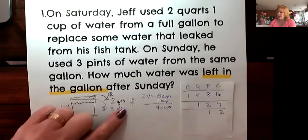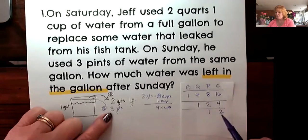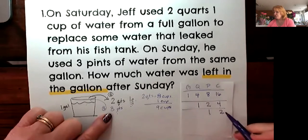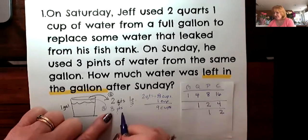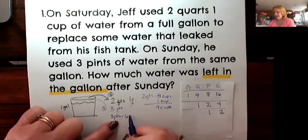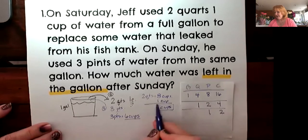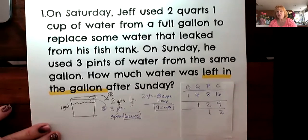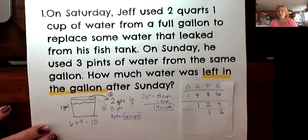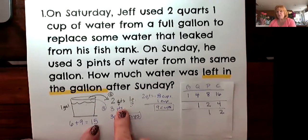Now over here I have three pints. One pint is two cups, so three pints would be six cups. So now I can take the six cups and the nine cups and combine those together: six cups plus nine cups equals 15 cups. So two quarts and one cup plus three pints is equivalent to 15 cups.